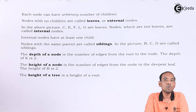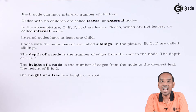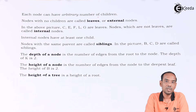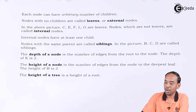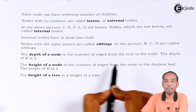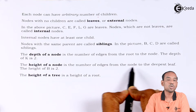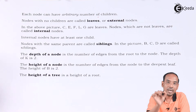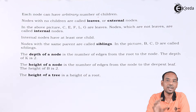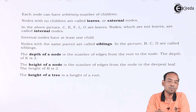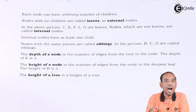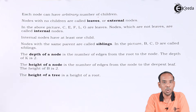The height of the node is the number of edges from the node to the deepest leaf. The deepest leaf connected in the tree structure determines the height — the number of edges from the node to that deepest leaf defines the height of the node.